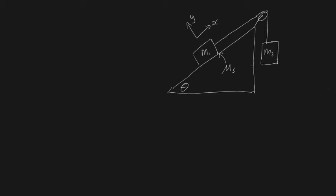First things first: free body diagrams. Let's do the free body diagram of our second mass first because it's simpler. We've only got two forces acting on it: the force due to gravity m2g, and we're also going to have a tension in the rope trying to pull it up, of T.